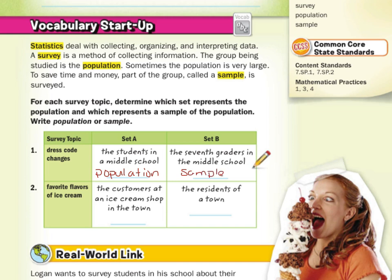For favorite flavors of ice cream: Set A is the customers at an ice cream shop in town, and Set B is the residents of a town. The residents of a town is the larger group, so that's going to be the population, whereas the customers at an ice cream shop in the town is our sample — it's our smaller group.